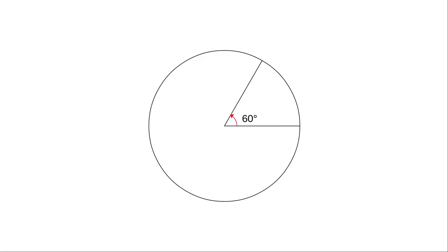To refresh your memory, degrees go from 0 to 360 and tell you how far you've turned around. Radians tell how far you have walked along the circumference of the unit circle, a circle with radius 1, and radians go from 0 to 2 pi.